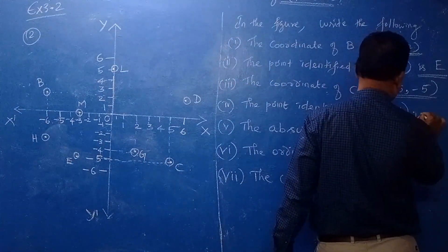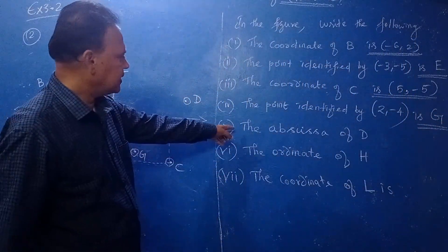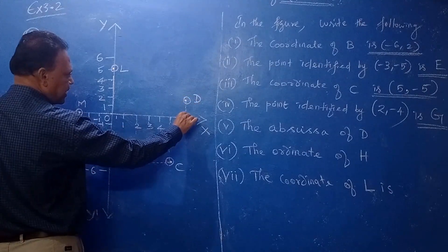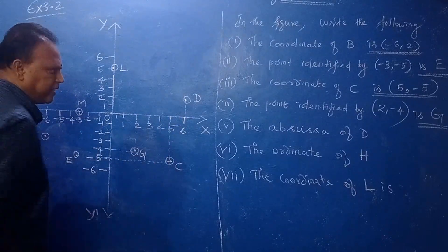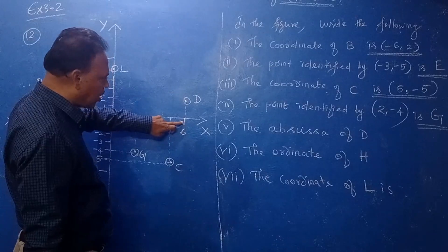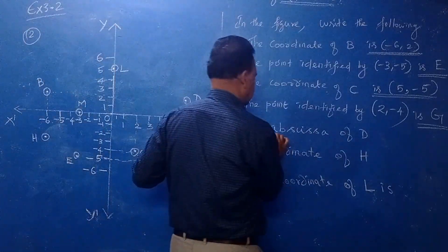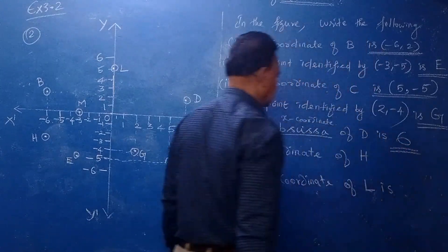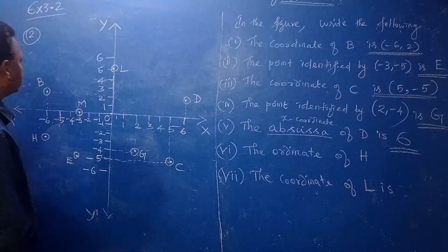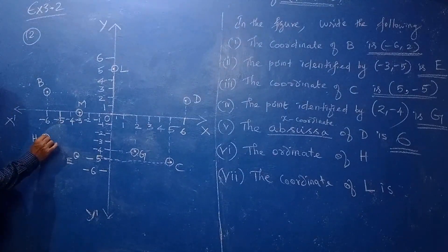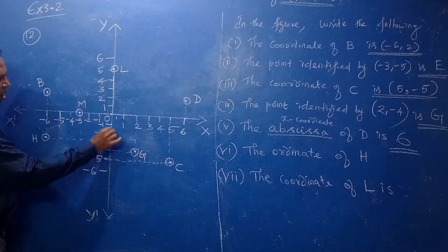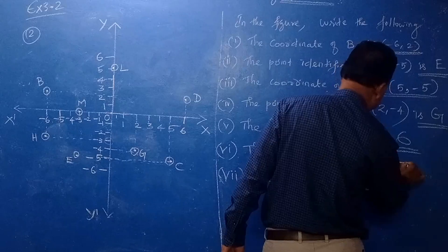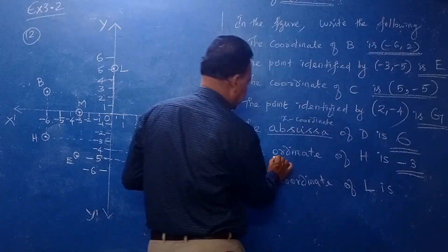The abscissa of B — abscissa means the x-coordinate. B is at (6, 2), so draw perpendicular to the X axis; the x-coordinate is 6. That is the abscissa. For the ordinate of H — ordinate means the y-coordinate — draw perpendicular to the Y axis; the y-coordinate of H is −3. Remember: abscissa means x-coordinate, ordinate means y-coordinate.